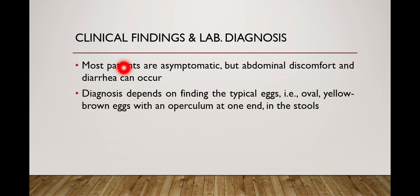Regarding clinical symptoms: most patients are asymptomatic, especially with light infection or when the adult worm burden is low in the intestine. But sometimes abdominal discomfort or diarrhea can occur, along with anorexia or weight loss. These are mild symptoms which can be presented by a patient infected with a heavy load of the parasite.